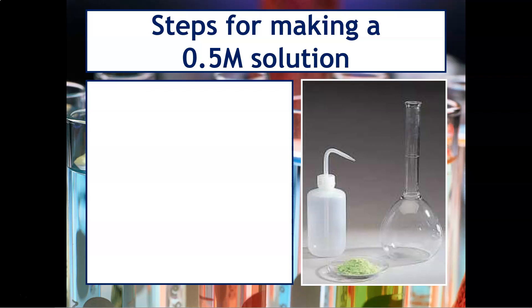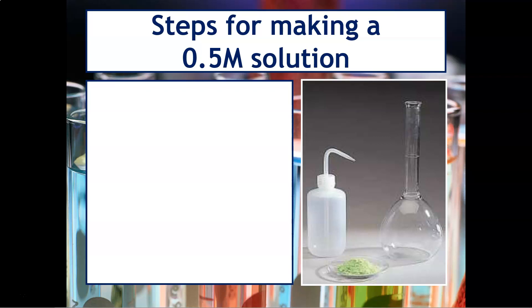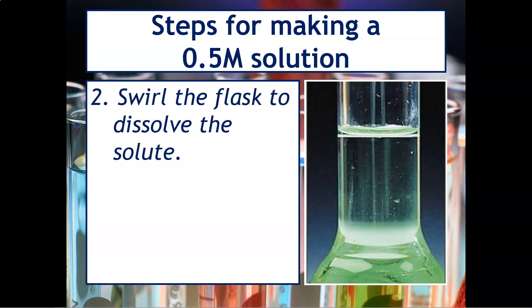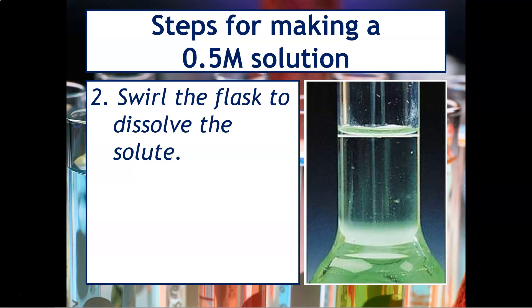Here are the steps needed to make a 0.5 molar solution — note that chemists usually say '0.5 molar,' not '0.5 molarity.' You will add 0.5 moles of the solute to a one liter volumetric flask half filled with distilled water, then swirl the flask to dissolve the solute as much as possible, and finally fill the flask to the mark etched on the side. The meniscus, or the level of the liquid, needs to touch that mark.